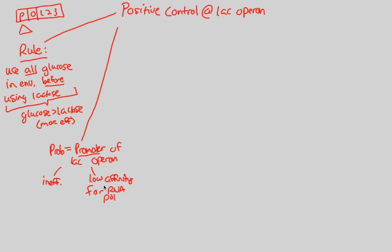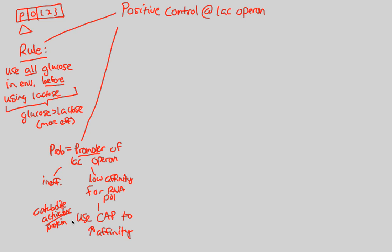What you can utilize is something very important to positive control: a molecule called CAP. We're going to use CAP to increase the affinity and combat the problem we have at the lac operon. CAP stands for catabolite activator protein. Positive regulation is all about these activators. CAP is going to be an activator that controls positive regulation at the lac operon. If we attach it onto the promoter region, RNA polymerase does a much better job of attaching onto the promoter region.